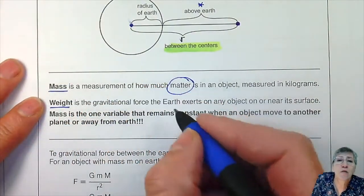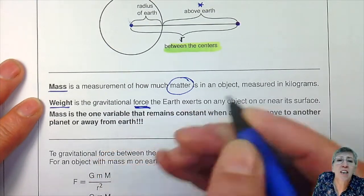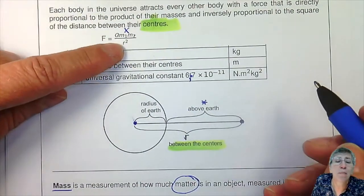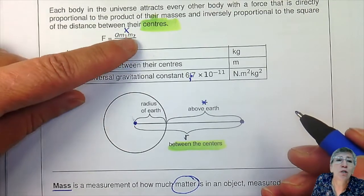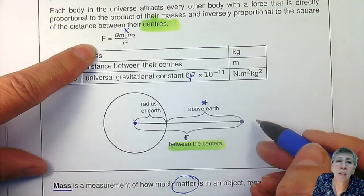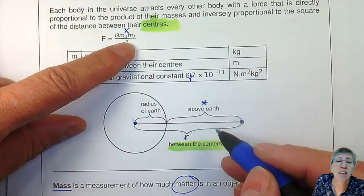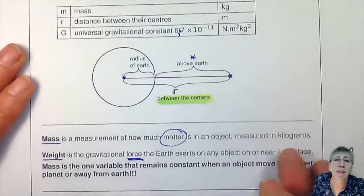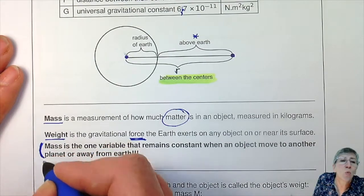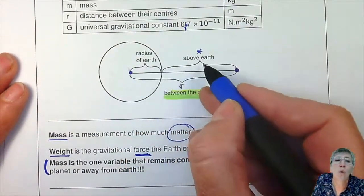Weight is the force with which the earth — or whatever planet you are on — attracts you, and that can change. If you go higher up, R is going to get bigger and it's inversely proportional to the square of R. So the further away you go, the less gravity you will experience. Your weight will become less if you go higher up, or if you move to another planet. Mass is the one variable that remains constant when you move to another planet or further away.